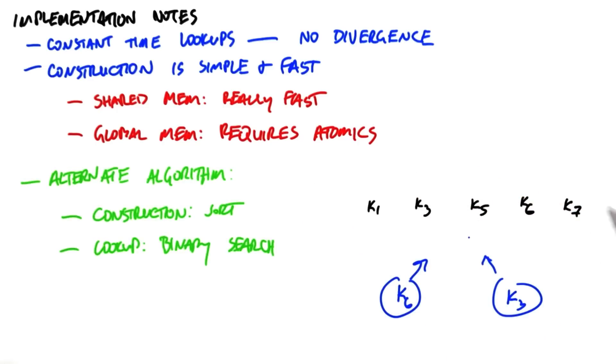And a final note, there's more than one way we might solve this general problem of check if an element is in a set. Instead of using hash tables, we could choose a fairly brute force way to do this. We could choose to sort all the elements in the set as a construction step, and then for the lookup step, we could do binary search into the set to see if that particular element is present.